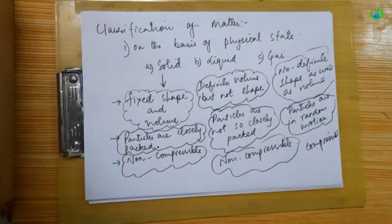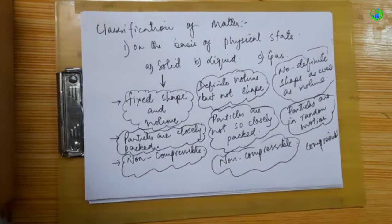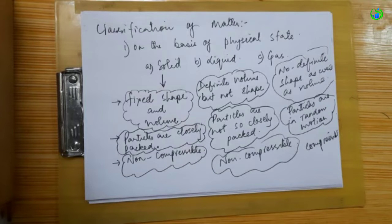We have a classification of matter. The classification includes: solid, liquid, gas, plasma, and Bose-Einstein condensate. These are the classifications by physical state.